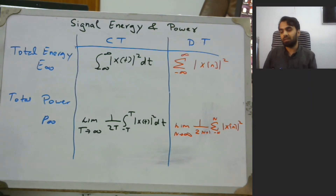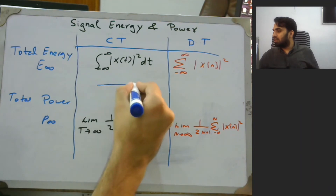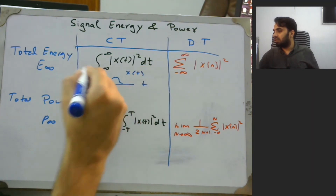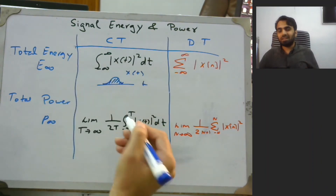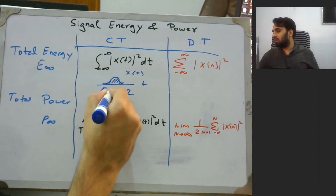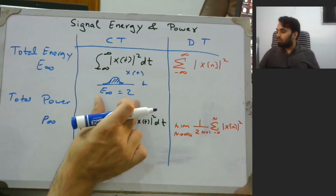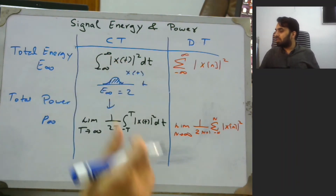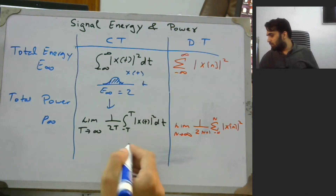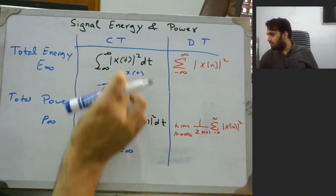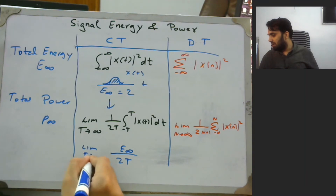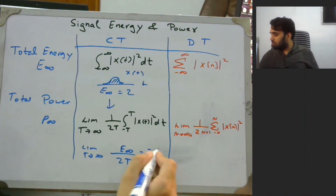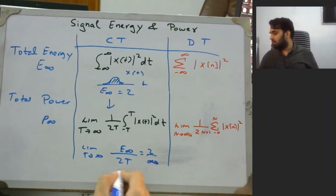As a quick example: if we have a signal x(t) and integrate from −∞ to ∞, this gives the area under |x(t)|². Say that area is equal to 2 — so E_infinity = 2. For the same signal, if we find the power, it would be E_infinity divided by 2T with a limit as T → ∞. Since E_infinity is 2 and T is approaching infinity, this is 2 divided by infinity, which equals 0.